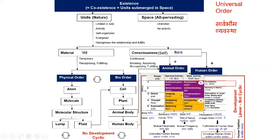Water is a molecular structure and you have a huge collection of these molecular structures — that is what we are calling the sea. So lump belongs to the physical order and remains in the physical order. When we say fluid, it is a liquid used for nurturing the bio-order — whether it is a cell, a plant, the animal body, or the human body. In normal terms, fluid means anything that flows, so does air also come under this, or is it only liquids? Well, all that is used for nurturing the body can be termed as fluid.